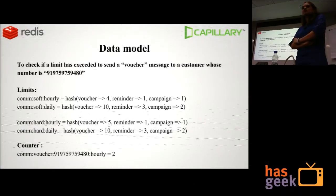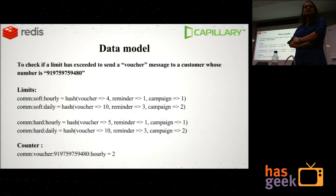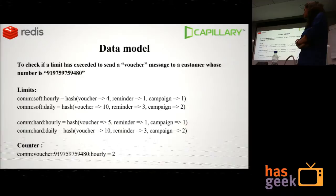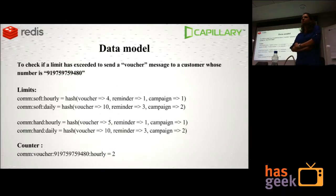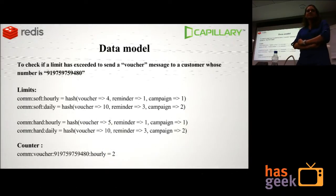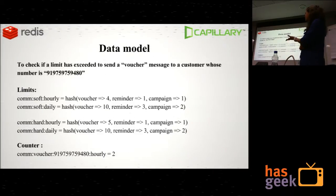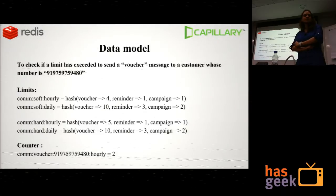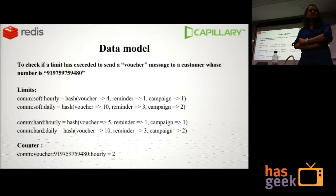Another reason we didn't use HashMaps is that it doesn't allow you to set expires on hash keys. Though HashMaps would utilize much less memory and might be faster, we are not doing a GET anywhere — it's just an increment which is O(1). So the only two commands used are increment and expire, and expire is only set on the first call.